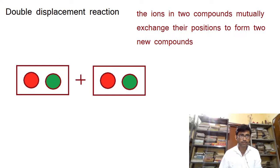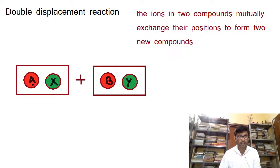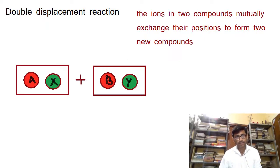Let us call this one A, this one X, this one B, and this one Y. So a compound AX with A as the metal ion and X as the non-metal ion, and another compound BY with B as the metal ion and Y as the non-metal ion, are reacting with each other.